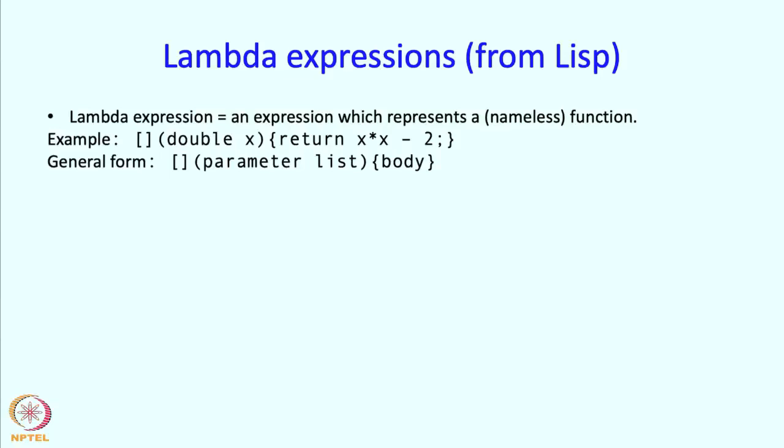The general form of this is the square brackets first and the square brackets we will tell you what they exactly do in a little bit later but first there is the parameter list. So double x is the parameter, if the function that you want to represent has more parameters you just put it here just like a regular old parameter list and then this is like a regular old body. In this case the function is really simple so you just have a single return statement but in general you can have a whole complete function here, however complex you want to make it. So that is what a lambda expression is.